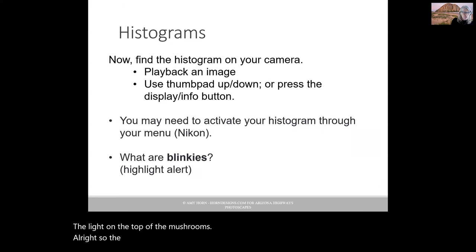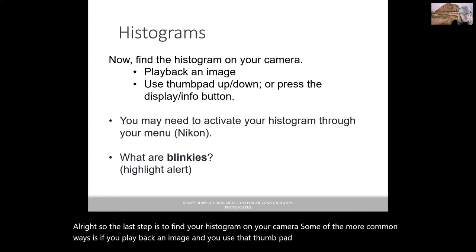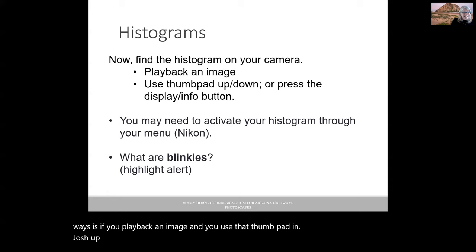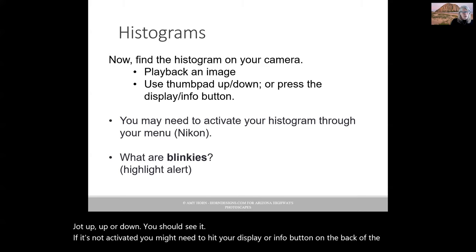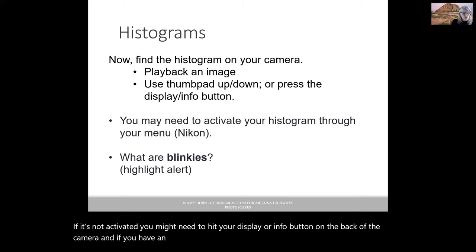So the last step is to find your histogram on your camera. Some of the more common ways is if you play back an image and you use that thumb pad and jog up or down, you should see it. If it's not activated, you might need to hit your display or info button on the back of the camera. And if you have a Nikon camera, oftentimes you really need to go into the menu and actually turn it on so that it will be activated.